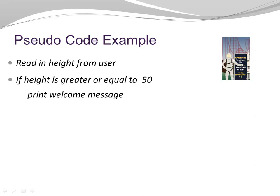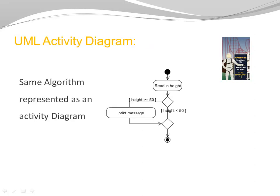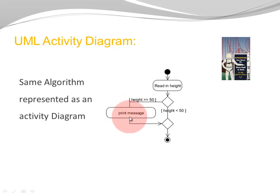Let's look at a second example. This is pseudocode that helps us decide whether someone is ready to ride a roller coaster. First we read in the height from the user, then we check: if the height is greater or equal to 50, then we print a welcome message. Here is the equivalent algorithm displayed as an activity diagram. We read in the height, reach a decision symbol — if height is greater or equal to 50 we reach the action that prints a welcome message, continue to a merge symbol, and reach the end. If height was less than 50 we go straight to the end and no welcome message is printed.